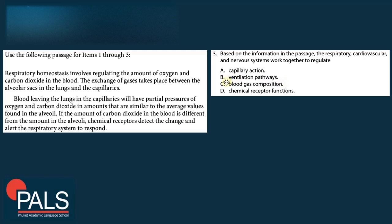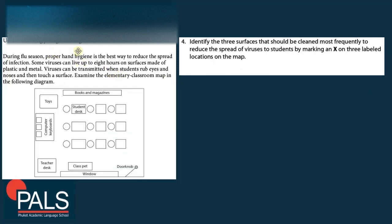Use the following passage and diagram for item 4. During flu season, proper hand hygiene is the best way to reduce the spread of infection. Some viruses can live up to eight hours on surfaces made of plastic and metal. Viruses can be transmitted when students rub their eyes and noses and then touch a surface. Examine the elementary classroom map: it shows books and magazines, toys, student desks, computer keyboards, the teacher's desk, class pet, window, and doorknob.